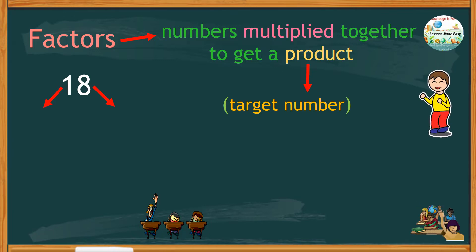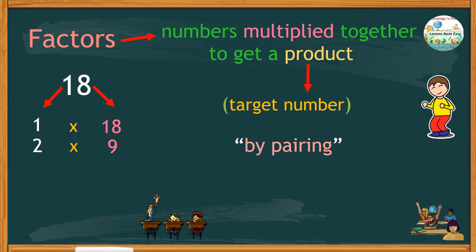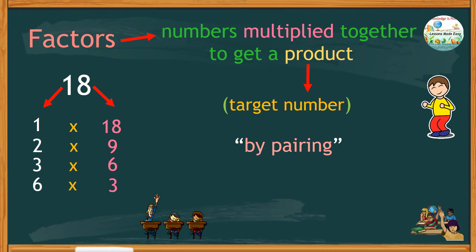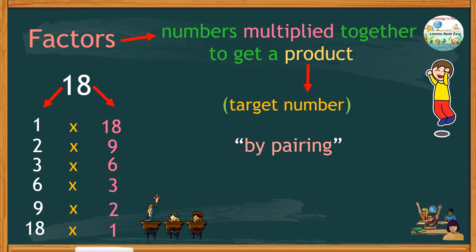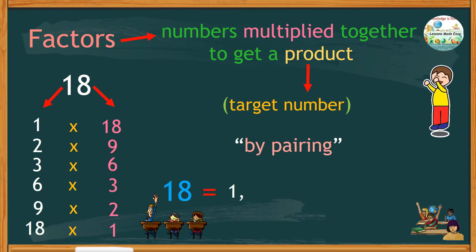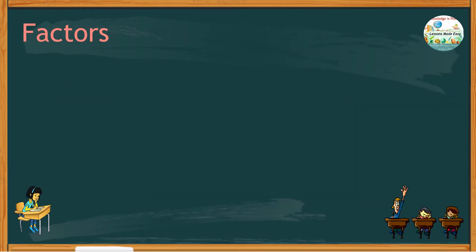We can do this by pairing, starting with 1 times 18, 2 times 9, 3 times 6, 6 times 3, 9 times 2, and 18 times 1. From this pairing we can clearly identify the factors of 18: we have 1, 2, 3, 6, 9, and 18 itself.